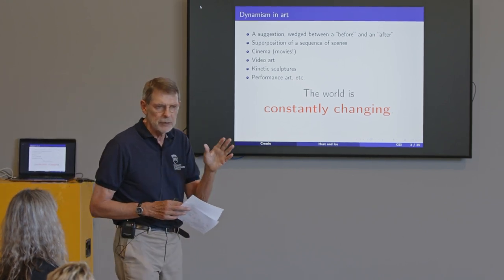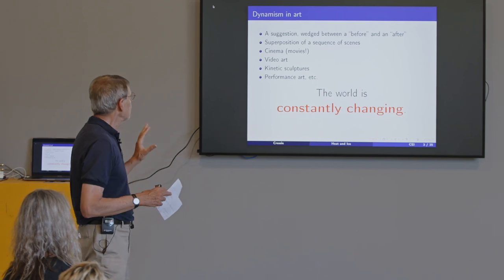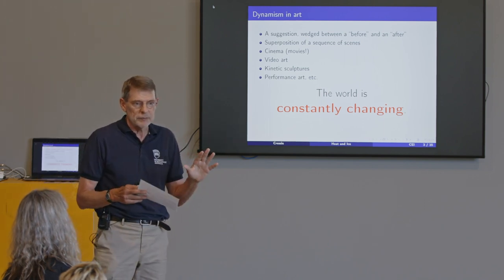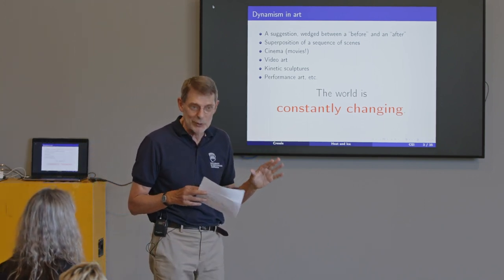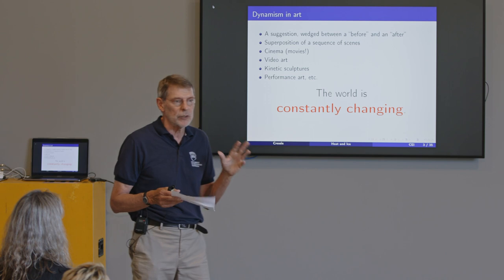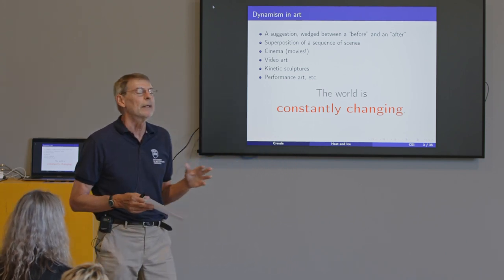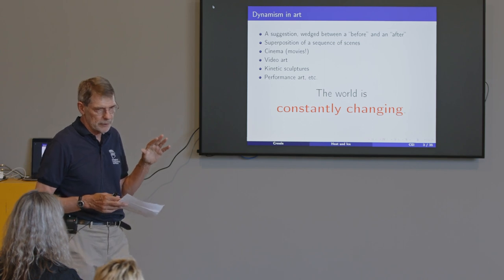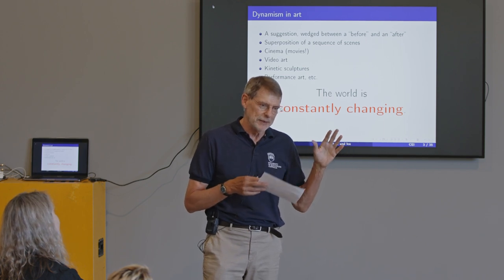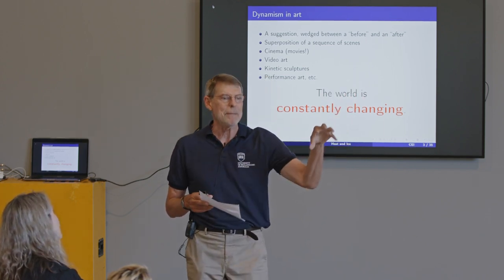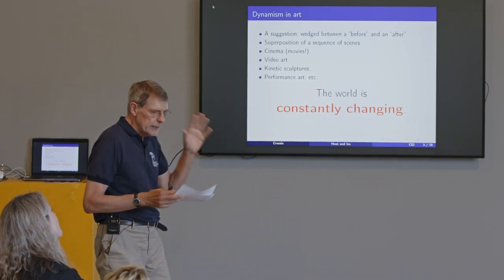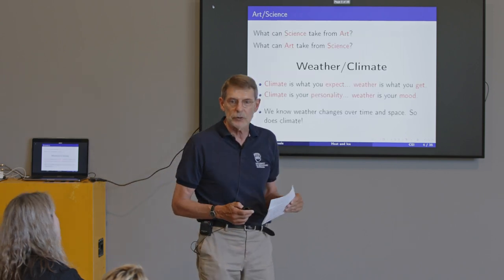There's a suggestion of a before and after in that two-dimensional painting — a superposition of sequences of events. Cinema, of course, is a form of art and we call them colloquially movies — they move. There's also video art, and Bill Viola is somebody I enjoy enormously. And anybody who went to the National Gallery in Canberra saw this wonderful kinetic sculpture with a big mouth that went around — you had the feeling you were going to be eaten by it. And there's performance art and various other things, all depicting change.